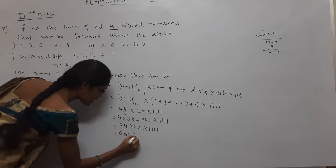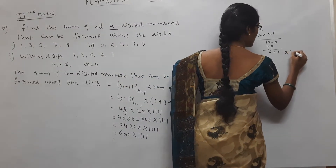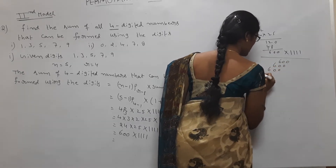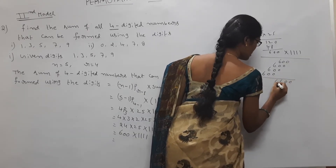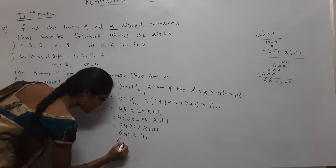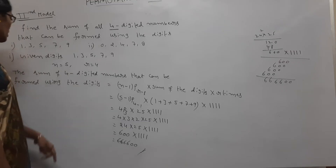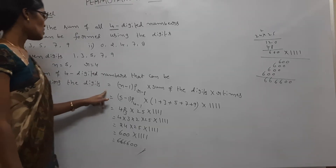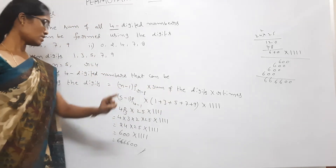So 600 into 1111. We write 1111 four times: 600, 600, 600, 600. Adding these gives 0, 0, 6, 6, 6, 6. So the sum of all four-digit numbers that can be formed using digits 1, 3, 5, 7, 9 is equal to 666,600.